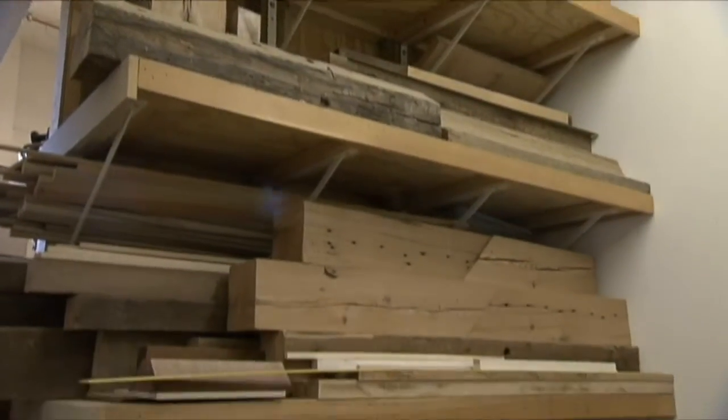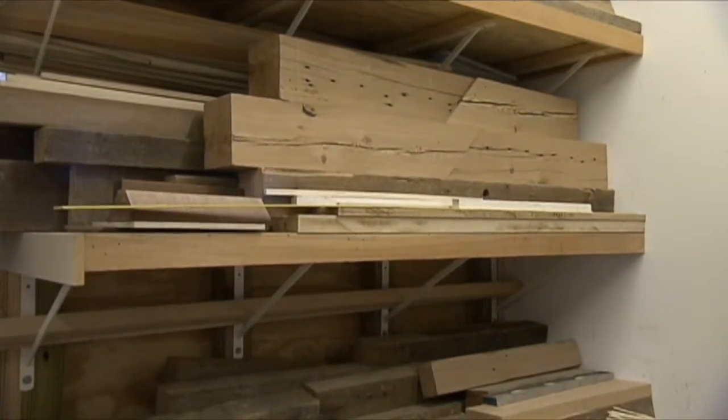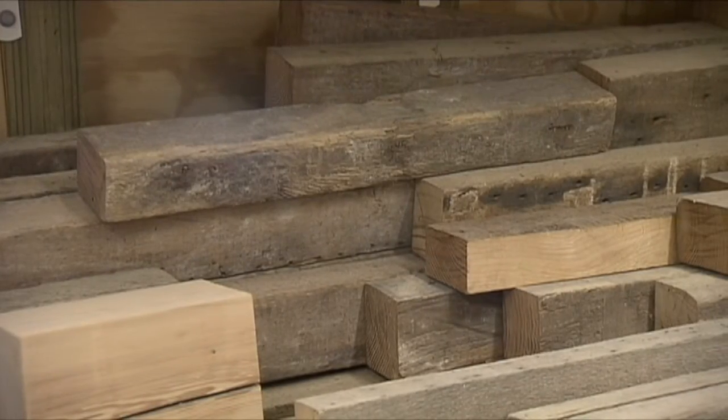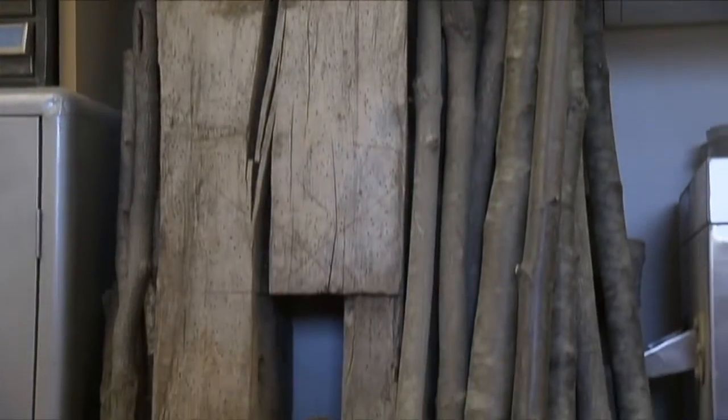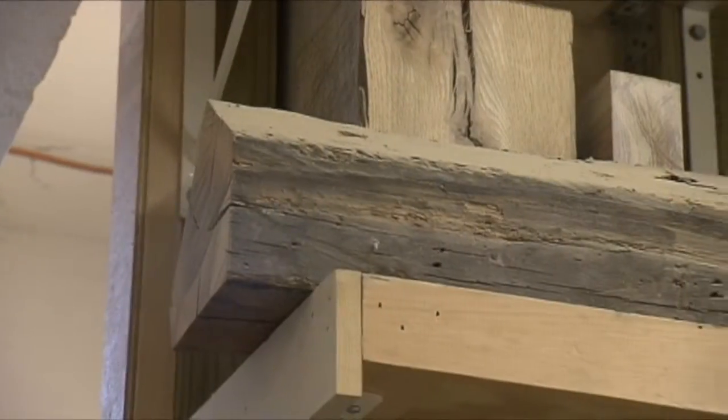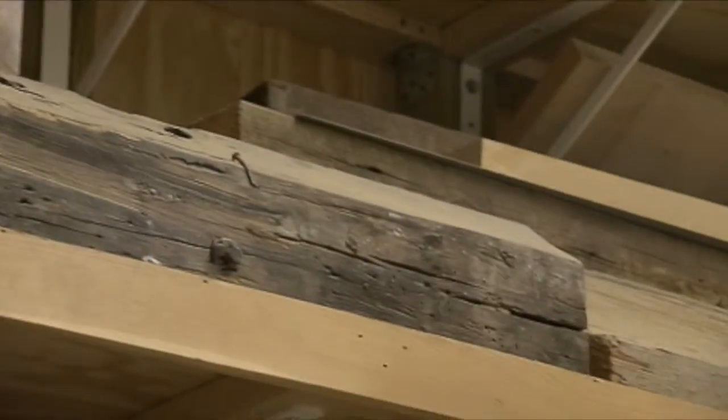He works with a lot of reclaimed wood, which scores him some eco points. Jakob likes the aged look of it. The wood isn't just identifiable as a beam, but it's got history to it.